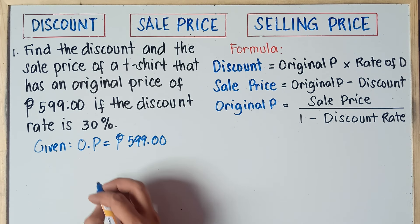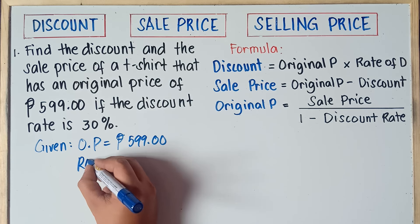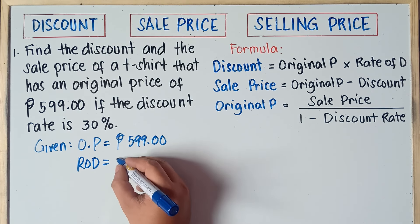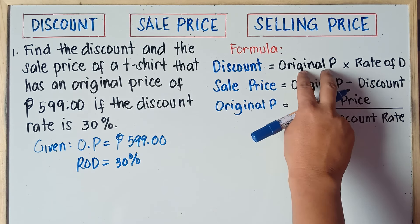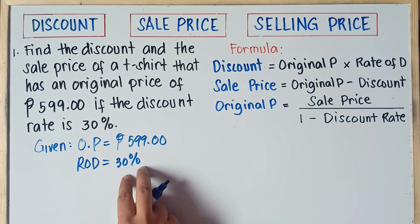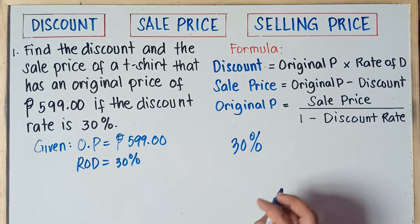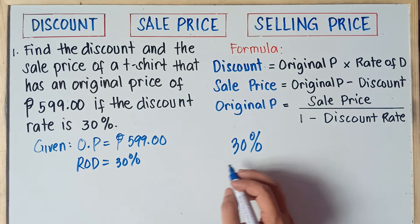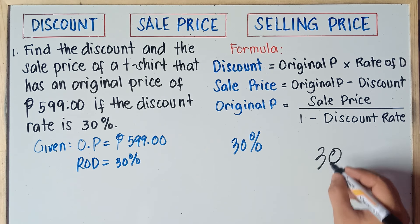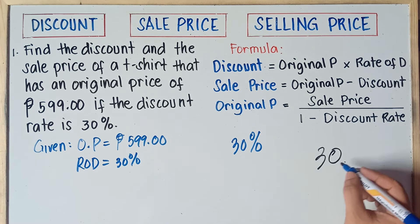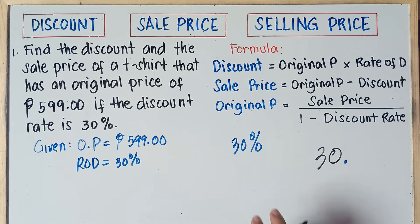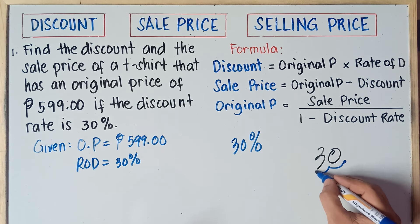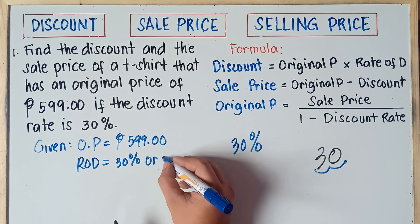And we have the Rate of Discount (ROD) = 30%. Now, you need to convert this into decimal because when we multiply original price times the rate of discount, you need to convert percent to decimal. So to convert 30% to decimal, just simply move the decimal point right to left twice. A whole number like 30 — the decimal point is always after the number. Move right to left: 1, 2. Therefore, 30% is equivalent to 0.30.